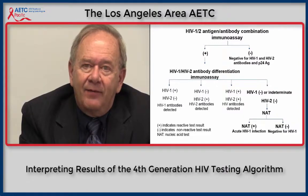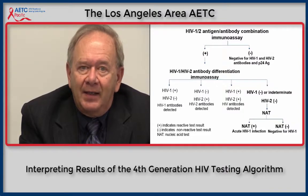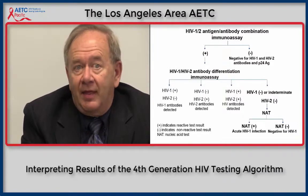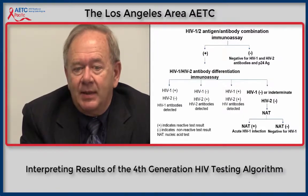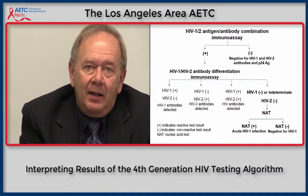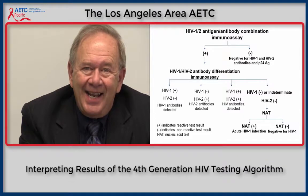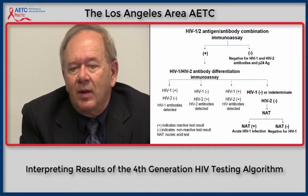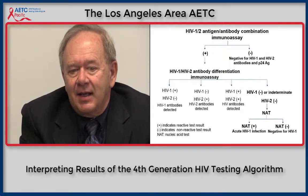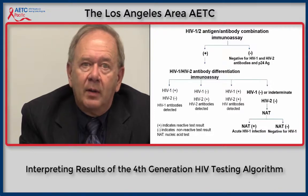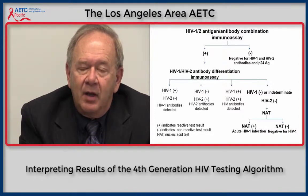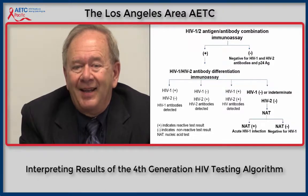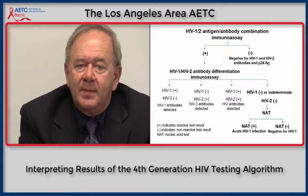If the specimen is positive for either HIV-1 or HIV-2 antibodies, it is considered positive for HIV and the individual should enter care. However, if the antibody assay is negative after a positive fourth-generation assay, the specimen should then go on to be tested with RNA — the nucleic acid test — in order to look for acute HIV infection, defined as the presence of HIV RNA before antibodies develop in an individual who has become infected.